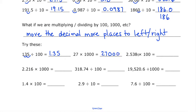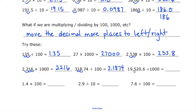For 2.538 times 100, I find my decimal place and move it two spots to the right, so it becomes 253.8. For 2.216 times 1000, I move the decimal place three spots to the right, so it becomes 2,216. For 15 divided by 100 — I find my decimal place and move it two spots to the left, so this becomes 3.1874... wait, 0.15. And for 19,520.6 divided by 1000, I find that decimal place and move it three spots to the left, so it becomes 19.5206.